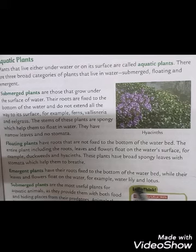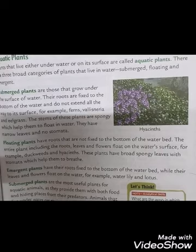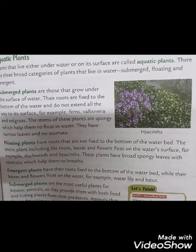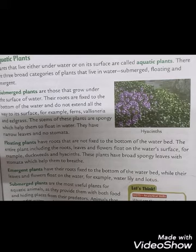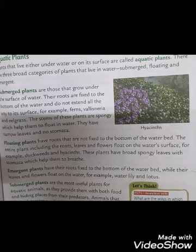Submerged plants are the most useful plants for aquatic animals, as they provide both food and hiding places from predators. Animals that live underwater get their nutrients from these plants and can also hide themselves from other animals.